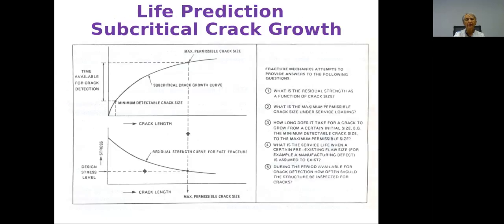Our final goal is to study all subcritical cracks — which can be quite large in corrosion fatigue — to know what the minimum detectable crack size is and how much time we have before reaching the maximum permissible crack size. This is very important because it tells us the interval between inspections, or how much time we can spend before making repair work on a component.